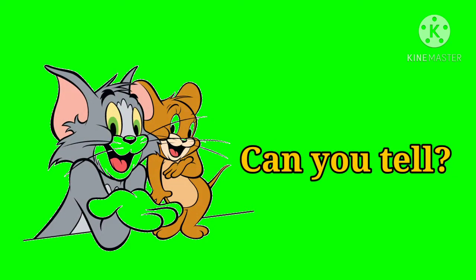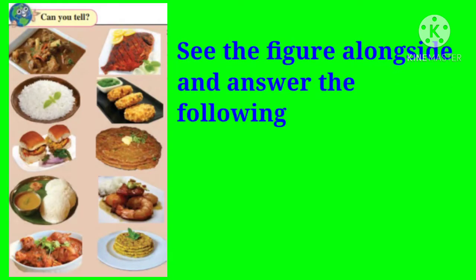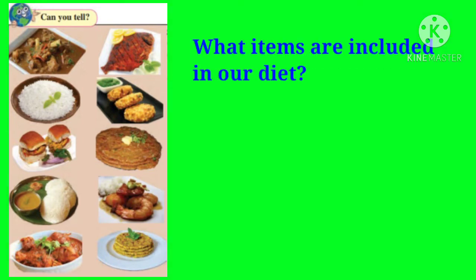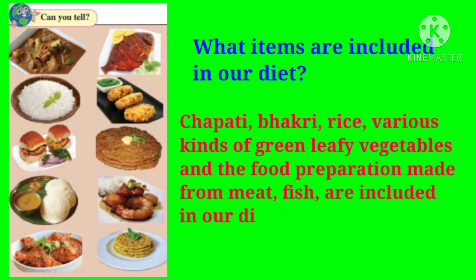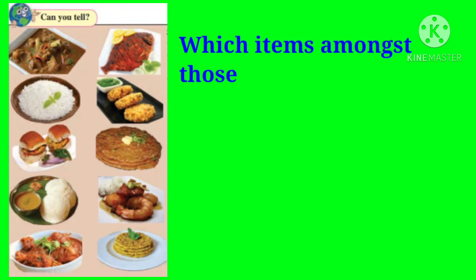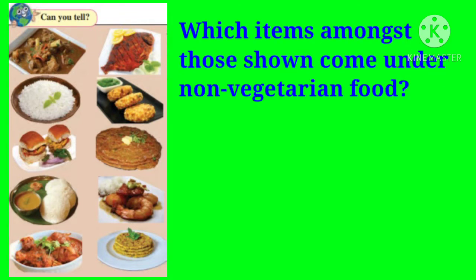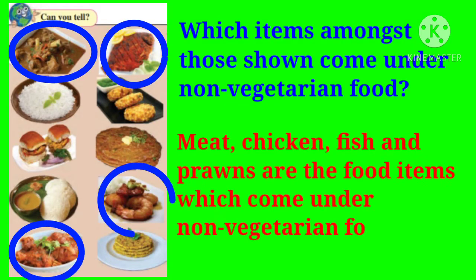Look at the figure alongside and answer the following questions. First question: what items are included in our diet? Chapati, bakri, rice, various kinds of green leafy vegetables, and food preparations made from meat and fish are included in our diet. Which items amongst those shown come under non-vegetarian food? Meat, chicken, fish, and prawns are the food items which come under non-vegetarian food.